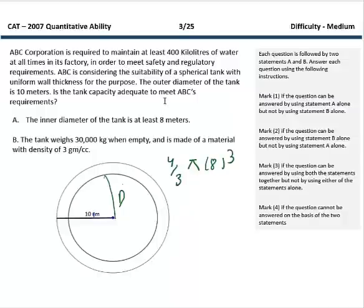In this question a spherical tank is provided with external diameter of 10 meters. We have been asked to comment on whether that tank can contain 400 kiloliters of water. Two statements are given. The first statement, that the inner diameter is at least 8 meters, actually answers this question because 4/3 pi times 8 cubed, which is the minimum volume, is still greater than 400 kiloliters. The second statement also surprisingly answers the question because you have been given the total mass and density, so you can calculate the tank mass and internal diameter. However, there was not an option for this scenario and the question might have had a mistake.